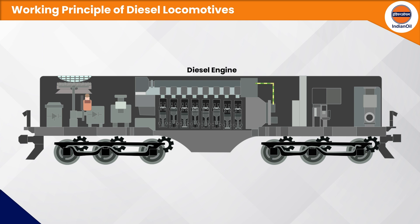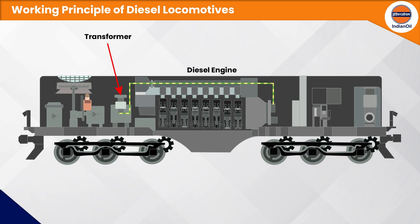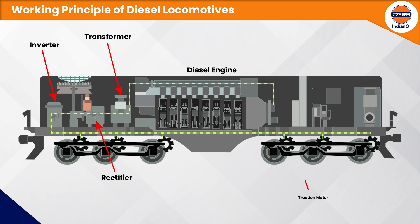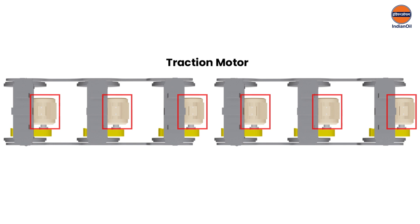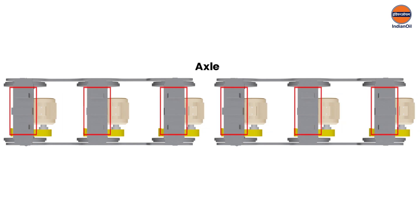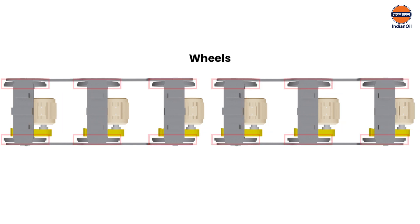The basic working principle of a locomotive comprises a large diesel engine that turns a shaft to produce electricity. The output current is fed to a transformer which controls the voltage as produced by the alternator. This fluctuating current is then converted into steady direct current through a rectifier, and the DC power is converted to three-phase AC supply through an inverter.